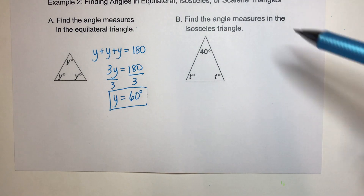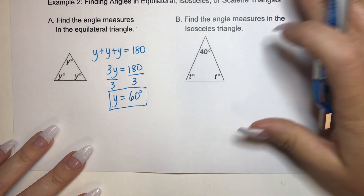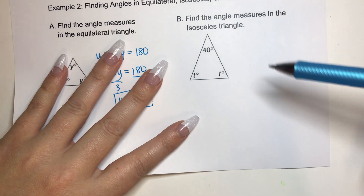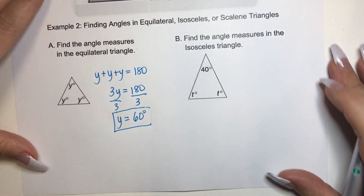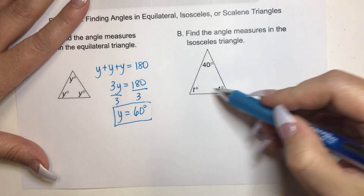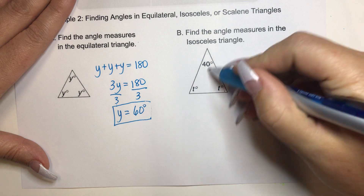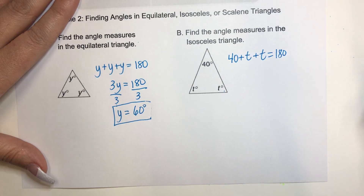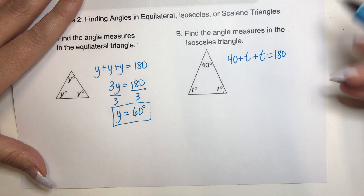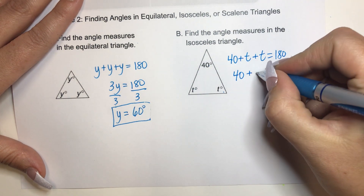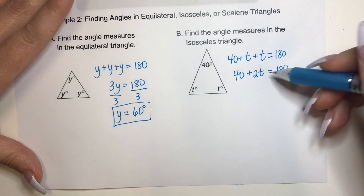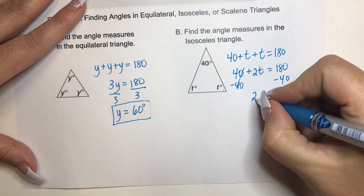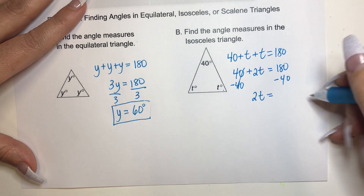Let's do Part B — find the angle measures in the isosceles triangle. An isosceles triangle has two equal sides and two equal angle measures. We have 40, T, and T, where T and T are the two equal base angles. Using the triangle sum theorem: 40 plus T plus T equals 180. Combining like terms, T plus T is 2T, so we have 40 plus 2T equals 180. Subtracting 40 from both sides, we get 2T equals 140.